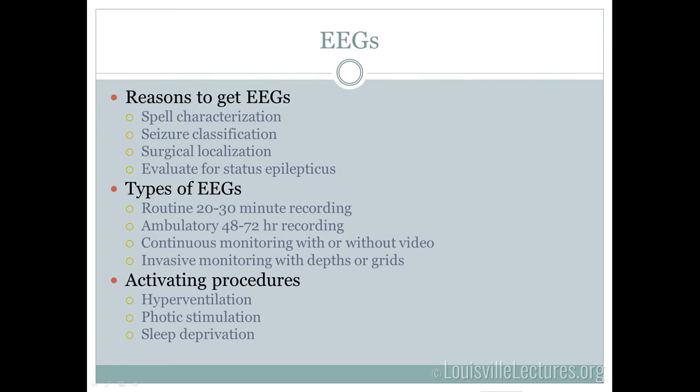EEGs are another test we love to do. The question is always: why get an EEG, and will it change management? Reasons include spell characterization — if you're not sure what a spell is, an EEG abnormality would be helpful. EEGs unfortunately aren't very sensitive, so most will be normal. But if it's abnormal, that's really helpful — the specificity is good. It also helps with seizure classification: are seizures focal or generalized? That really changes our management.